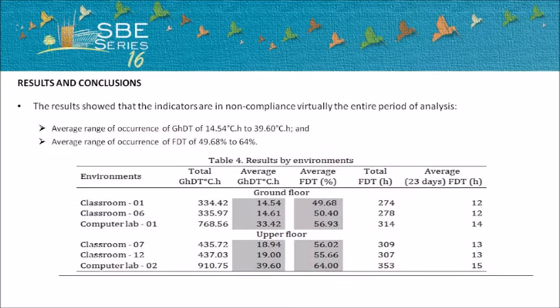The study showed uncomfortable environments and non-conforming indicators. An average range of GHDT of 14.54 to 39.60 degrees Celsius-hours was found, indicating temperatures above the range of comfort, and an average range of FDT of 49.68 to 64 percent, pointing to a daily constant frequency in occurrence of discomfort.